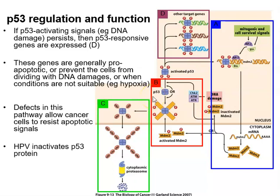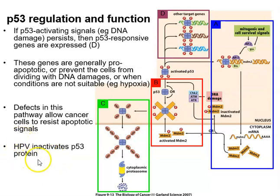Like RB1, the TP53 coding gene is very frequently mutated and inactivated in cancer. In cancers, the P53 gene itself can become mutated rendering it inactive, or MDM2 protein can be overexpressed which degrades P53 — either leads to a P53-deficient phenotype. The HPV protein E6 also inactivates P53, alongside E7 inactivating PRB.